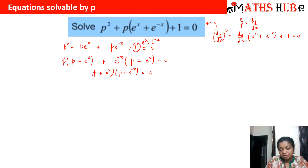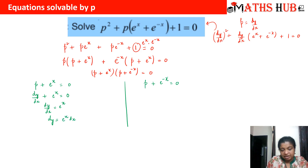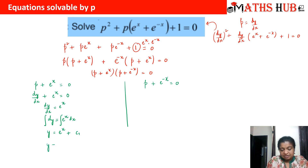When the product of two factors equals 0, one or both must equal 0. Setting the first factor to zero: P + e^x = 0, which gives dy/dx = −e^x. This is variable separable: dy = −e^x dx. Integrating, we get y = −e^x + c₁, or equivalently y + e^x − c₁ = 0. Wait — dy = e^x dx integrates to y = e^x + c₁, giving y − e^x − c₁ = 0.